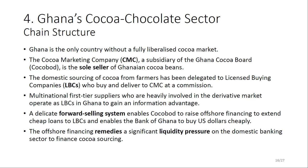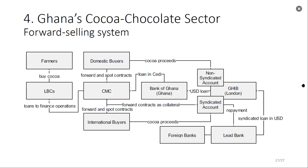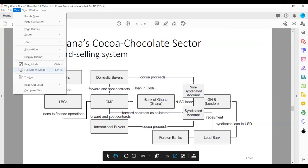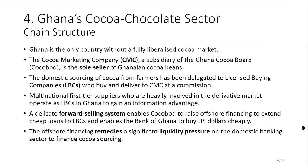Within the financialized sector, CMC deploys a forward selling system which enables Cocoa Board to raise financing largely offshore with a group of syndicated banks. This enables it to buy cocoa from farmers. The capital requirement on an annual basis exceeds 2 billion US dollars. This affords the Bank of Ghana access to cheaper US dollar loans. If Cocoa Board were to raise these funds locally, it would lead to a liquidity crunch in the domestic financing sector.